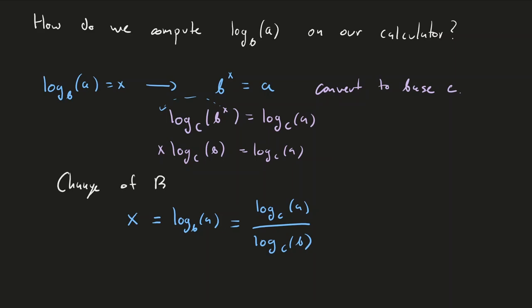So this is called the change of base formula. It's rather nice. And so we get to pick C. So you can actually pick. This gets picked. It's one that you like. One that you know values of. Again, probably the common or natural log.